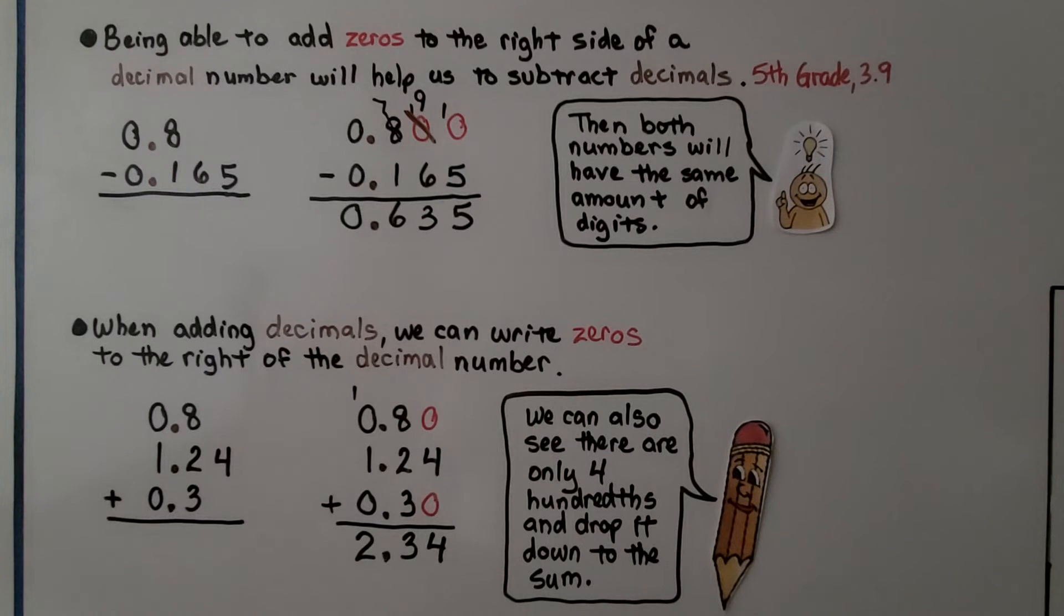And when adding decimals, we can write zeros to the right of the decimal number. If we see this, we can put zeros as placeholders. So they'll have the same amount of digits. But we can also see here that there's no other hundredths except the 4. So we just drop the 4 down. Then we add the tenths place.